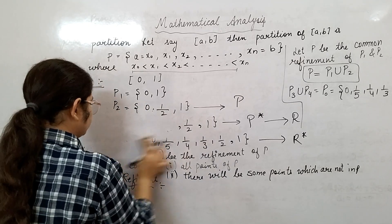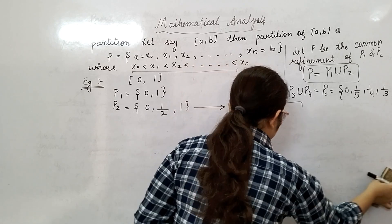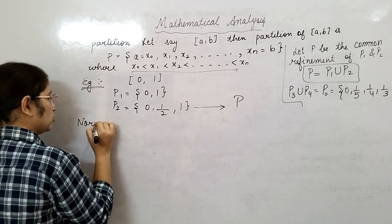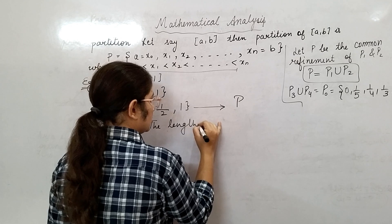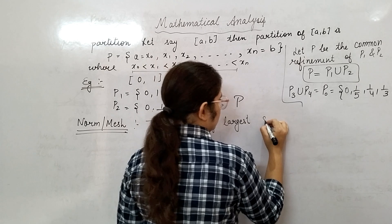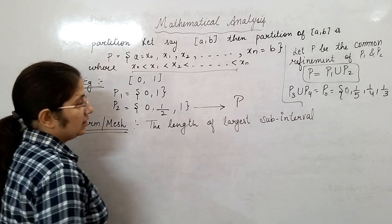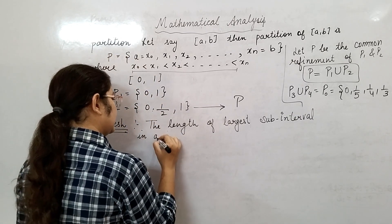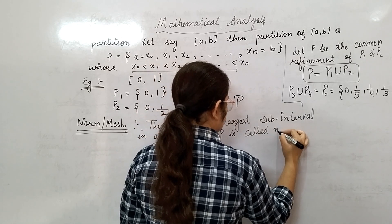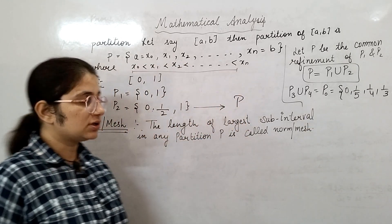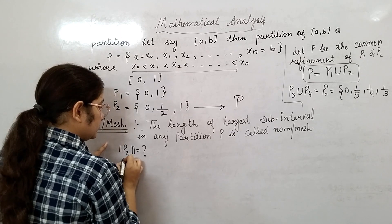Now I will define the norm of the partition - what this norm means for any partition. Norm, another name of norm is mesh. What is this? The length of the largest sub-interval in any partition - that will be the norm of partition P. So let me calculate the norm for P₂. I am doing all the work for P₂.